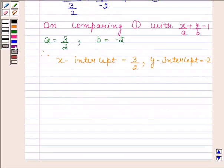Hence, the given equation in intercept form is x by 3 by 2 plus y by minus 2 equals 1. Its intercept on the x-axis is 3 by 2, and its intercept on the y-axis is minus 2. This is our required answer. This completes the session.